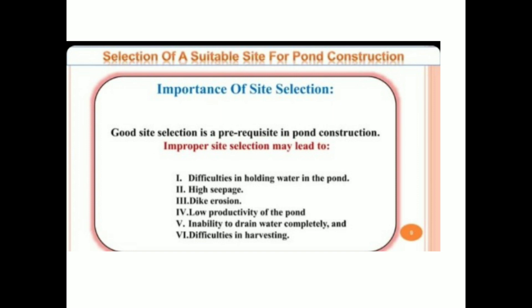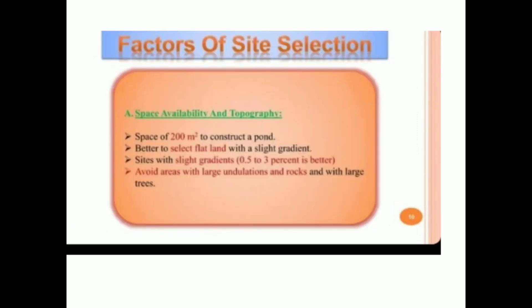Improper site selection may lead to difficulties such as: inability to hold water in the pond if the soil is composed of silt or clay that absorbs water; high seepage where water seeps into the earth; dyke degradation where the dyke cannot hold water to the required level; low productivity with higher production costs; and difficulty in draining water completely and in harvesting.